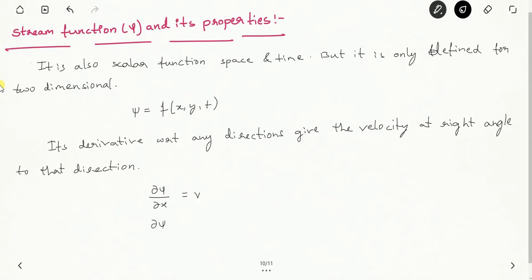Similarly, if you take ∂ψ/∂y, we get the velocity perpendicular to the y direction, which is u — but here we get a negative sign of u, so the opposite direction gives the velocity. So the representation of velocity components in terms of stream function is: ∂ψ/∂x = v and ∂ψ/∂y = −u. To write these two equations, remember that the derivative with respect to any direction gives the velocity at right angle to that direction.